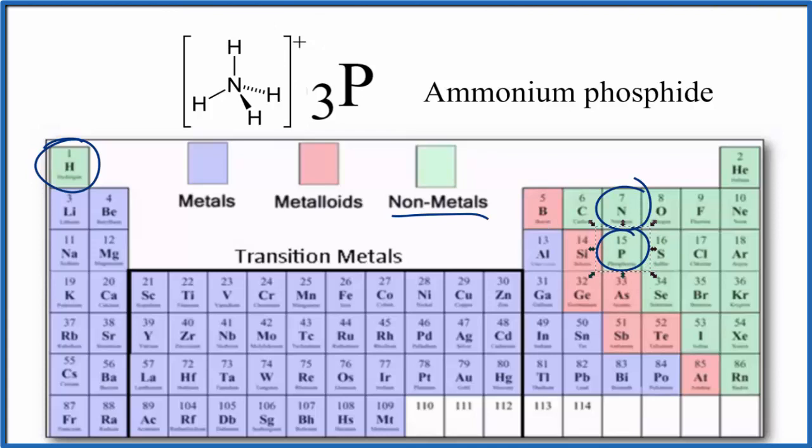Phosphorus right here, that's in group 15, sometimes called 5A, it has a 3 minus ionic charge.